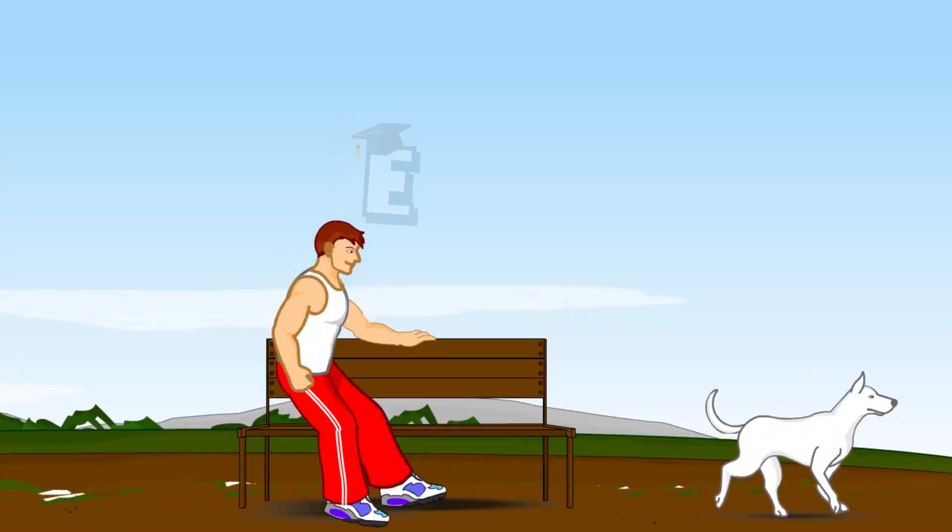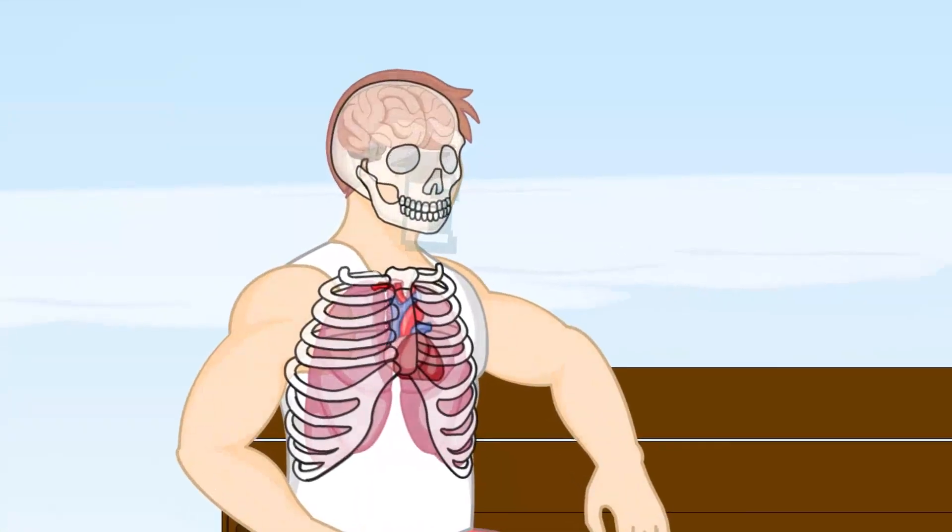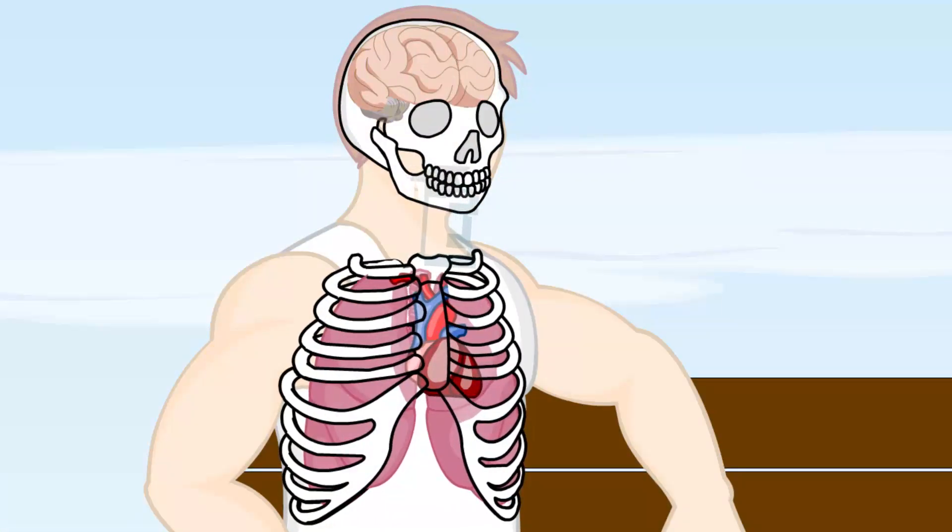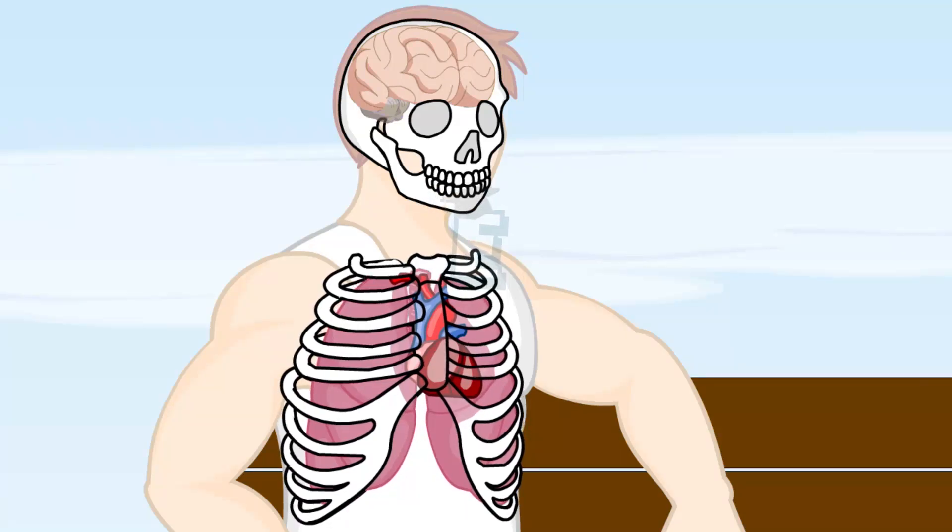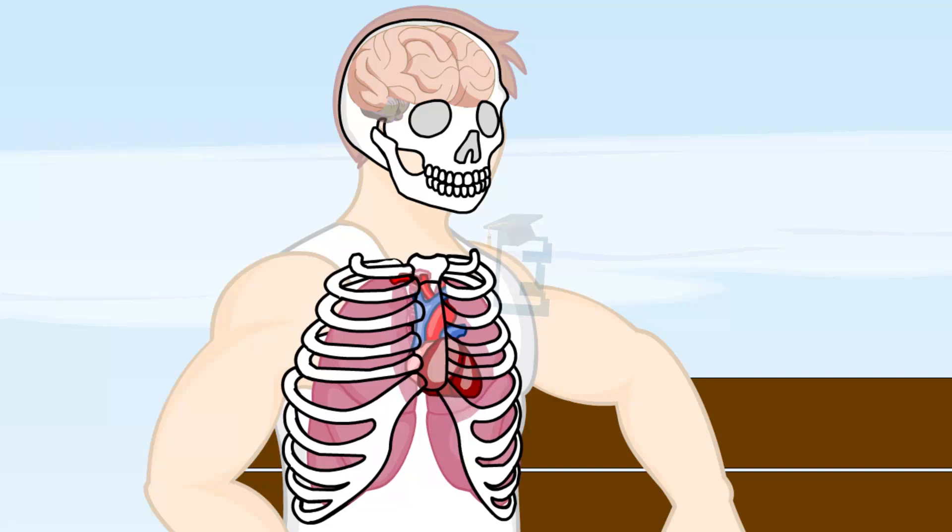Besides this, the skeleton also protects our vital organs such as the brain, lungs, and heart. If there are no ribs, our lungs can be easily injured. This is the same with the skull protecting our brain.